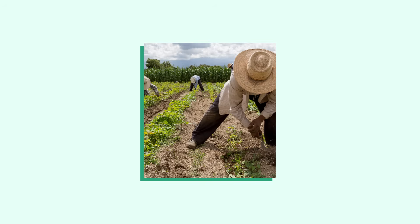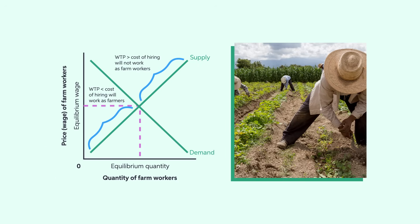In a free market, the government has no say in who becomes a farmer or how many crops should be produced. Instead, the decision to allocate workers to farms is determined based on the decentralized decisions of millions of workers who are looking for work. The prices of crops and the salary to farm workers adjust in a free market to ensure that there are people who are willing to work as farmers.